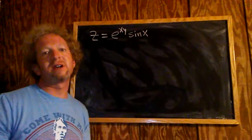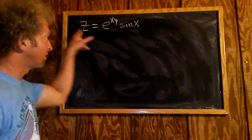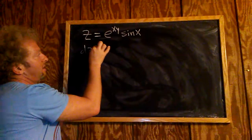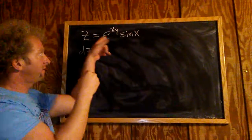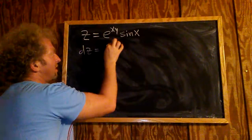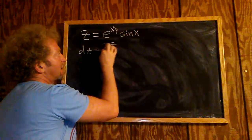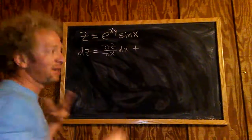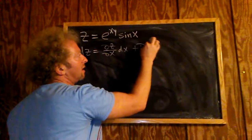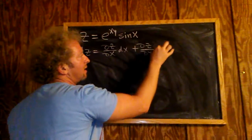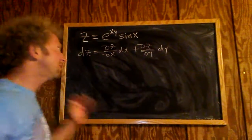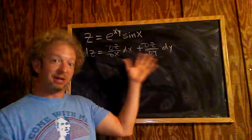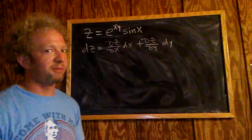We have a function of two variables and we're going to find what's called the total differential. The total differential is given by the formula: dz equals the derivative of the function with respect to x — that's ∂z/∂x dx — plus the derivative with respect to y — ∂z/∂y dy. All we have to do is compute ∂z/∂x and ∂z/∂y and plug them into the formula.